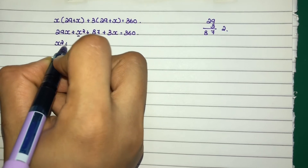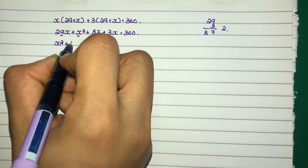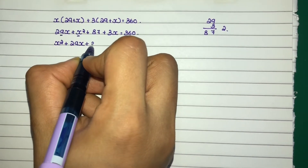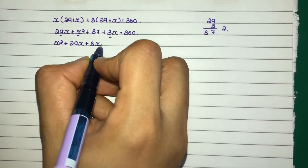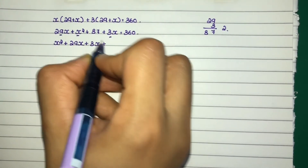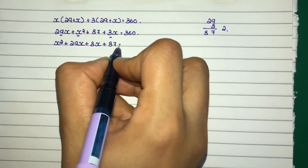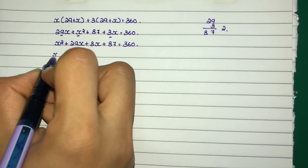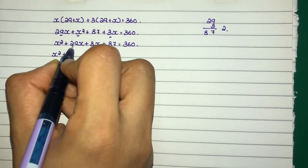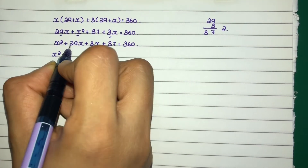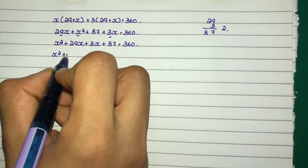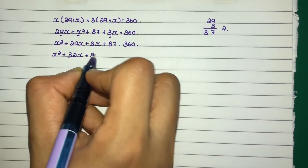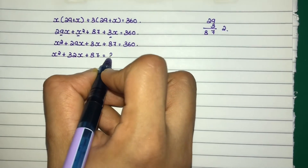Collecting terms: x squared plus 32x plus 87 equals 360.